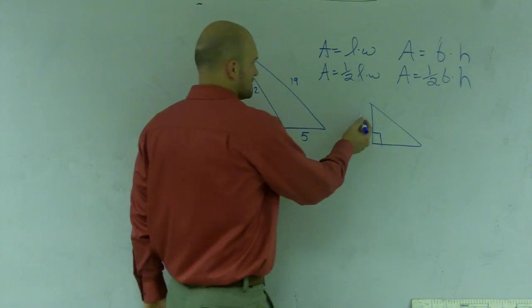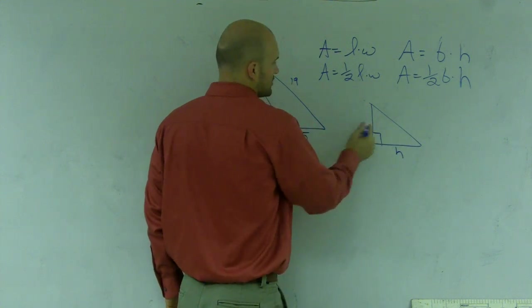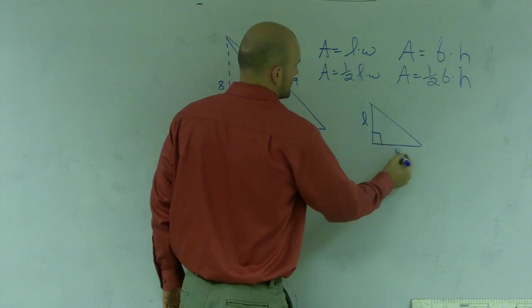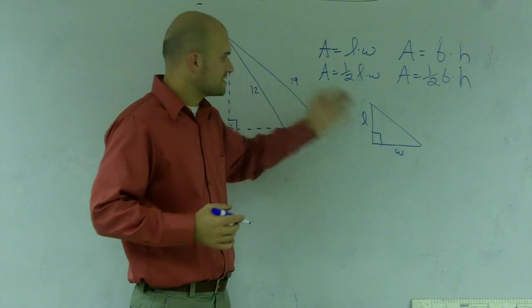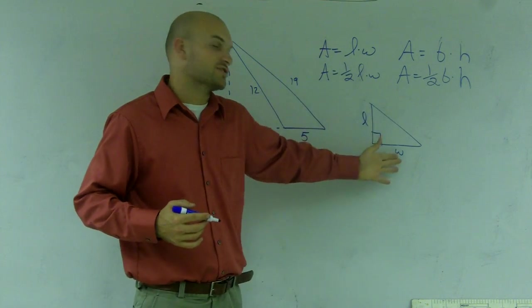So it's very easy. You can either do base times height or length times width. It doesn't matter. We can't confuse these, right? So it doesn't matter which one you use when you have a right triangle.